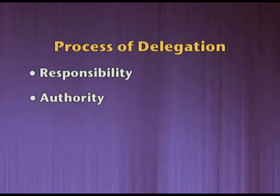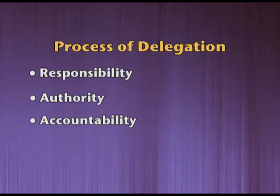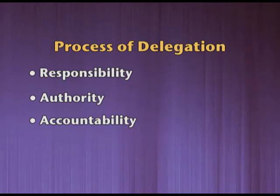The third and most important step in the delegation process is accountability. Once responsibility and authority are given to the employee, he is completely accountable for completing that job. His responsibility is fixed. If the work is not completed, he is accountable to the superior, who must ask the subordinate why the work was not completed, and the subordinate has to answer the reasons behind the non-completion of the task. So we have come to an end of the process involved in delegation, which comprises responsibility, authority, and accountability.